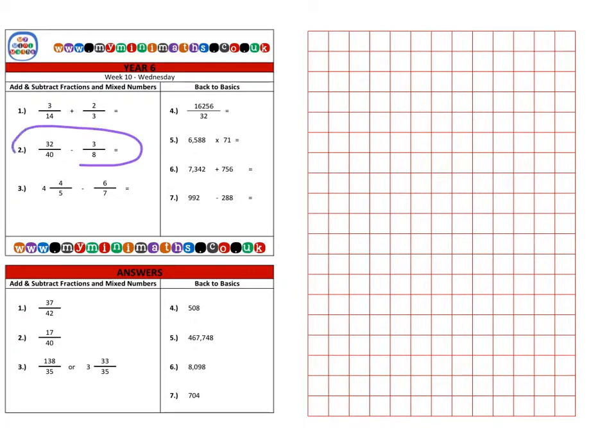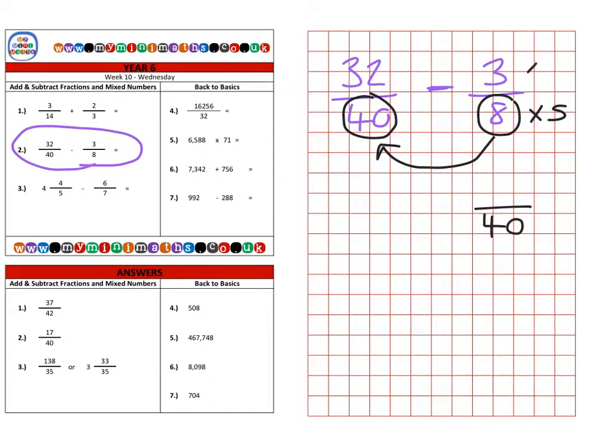Next we're on to question two, which is 32 fortieths, and this time we're subtracting, taking away 3 eighths. We need to get the denominators to be the same. We can see that 8 is a factor of 40. I can change this 8 into 40 by multiplying it by 5, and if I do the same with the numerator at the top, I get a new equivalent fraction of 15 fortieths. Obviously this fraction here remains the same because it's already out of 40.